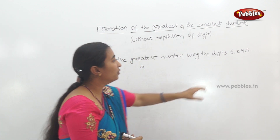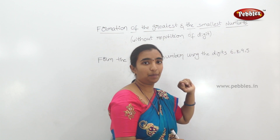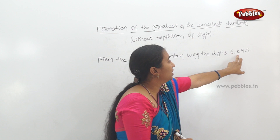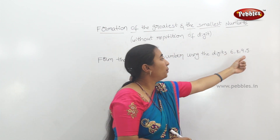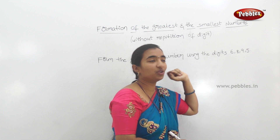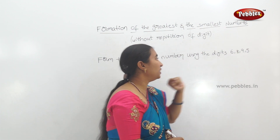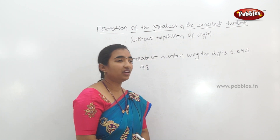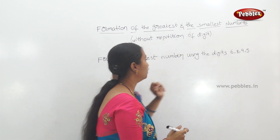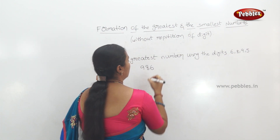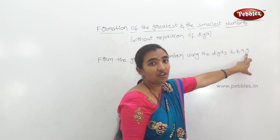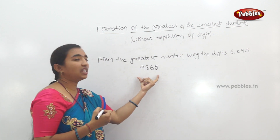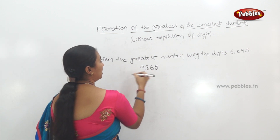We collect the digits and arrange them. Starting with the largest: 9, then 8, then 6, then 5. The greatest number is 9,865.